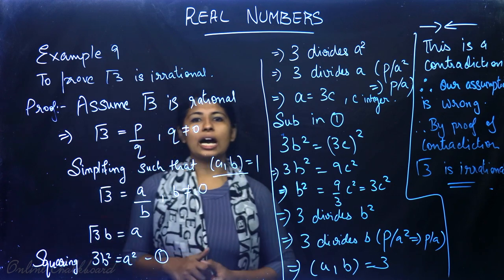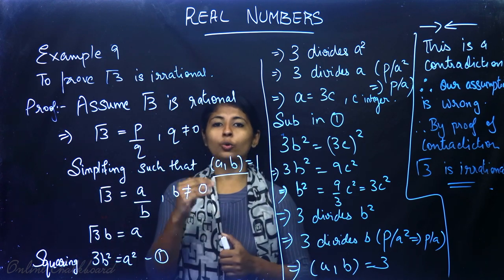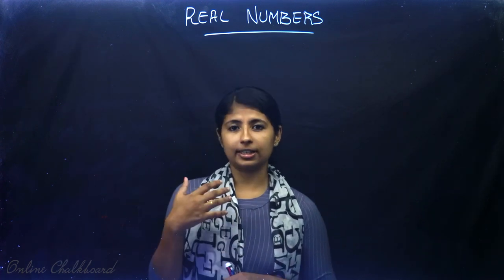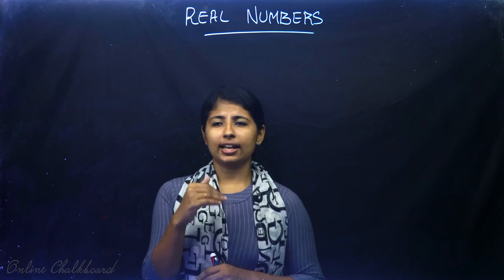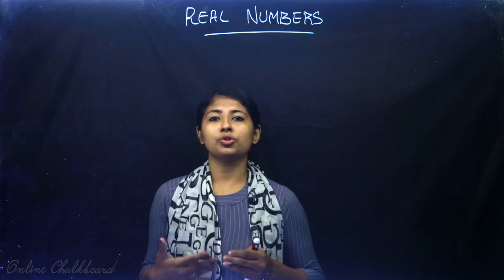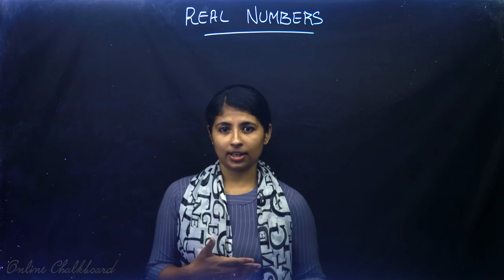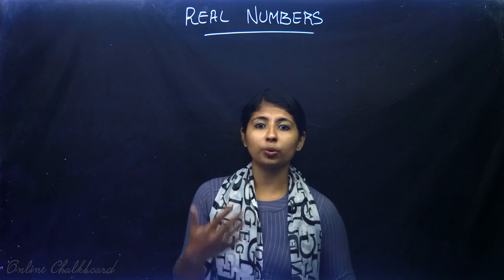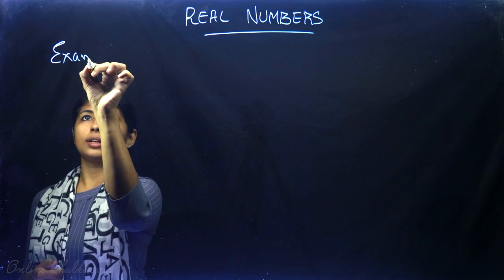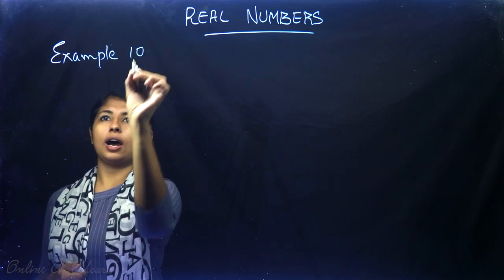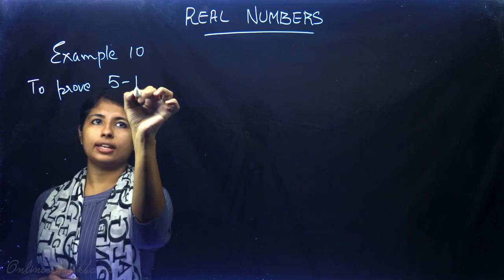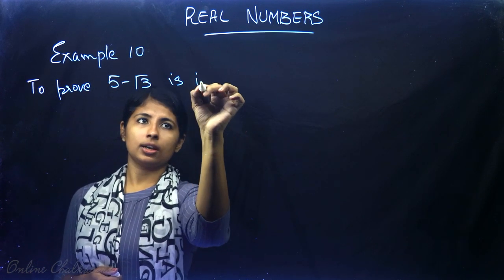This is exactly how you have to prove for each and every √p where p is a prime number. We have come across in Class 9 that the sum of a rational number and an irrational number is irrational, and also the product and quotient of a rational and irrational is irrational. Now we will be proving how they become irrational. Consider Example 10: prove that 5 − √3 is irrational.